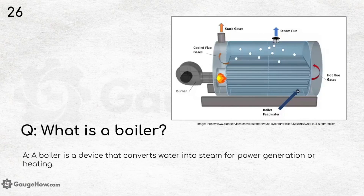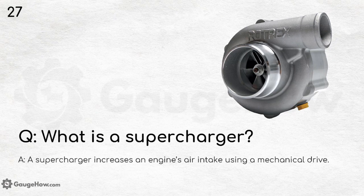What is a boiler? A boiler is a device that converts water into steam for power generation or heating. There are many types that might be asked about, and you should be able to explain each type and its working. What is a supercharger? A supercharger increases an engine's air intake using a mechanical drive.